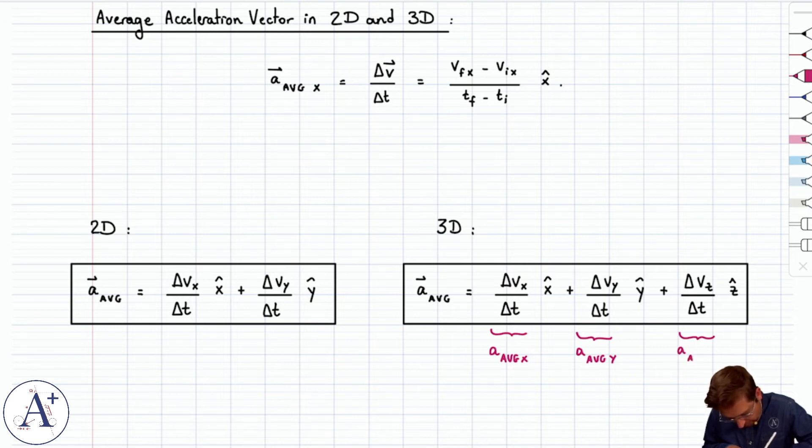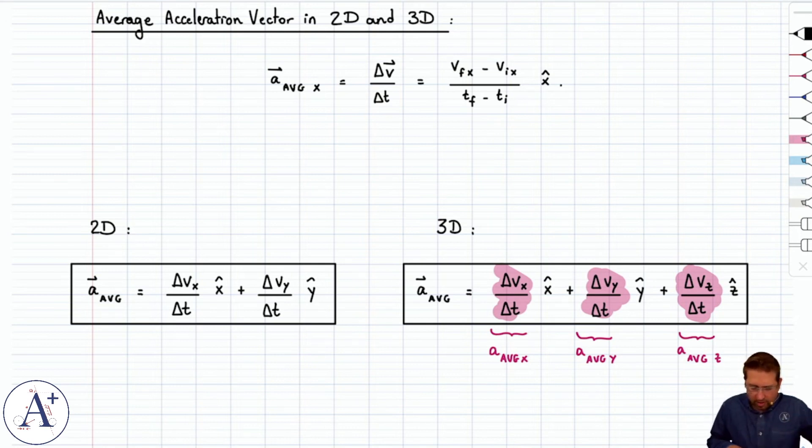And now note that I am not talking about x hat, z hat, or y hat, I'm just talking about these fractions. Those are the components. The x hat, y hat, z hat, just are there for direction, but what's highlighted in pink, those are what we tend to call a_average_x, y, and z.